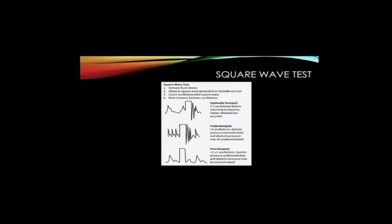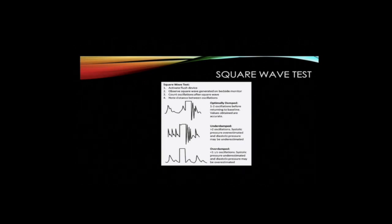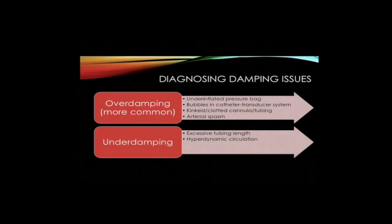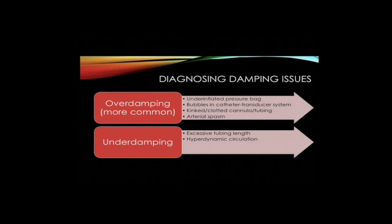A square wave test can be done to ascertain if the tracing is under or over-damped. In an optimally damped trace, there should be one to two oscillations before a return to the baseline. Common causes of over-damping include an under-inflated pressure bag, bubbles in the catheter transducer system, a kinked or clotted cannula or tubing, or arterial spasm. Common causes of under-damping include excessive tubing length and a hyperdynamic circulation.